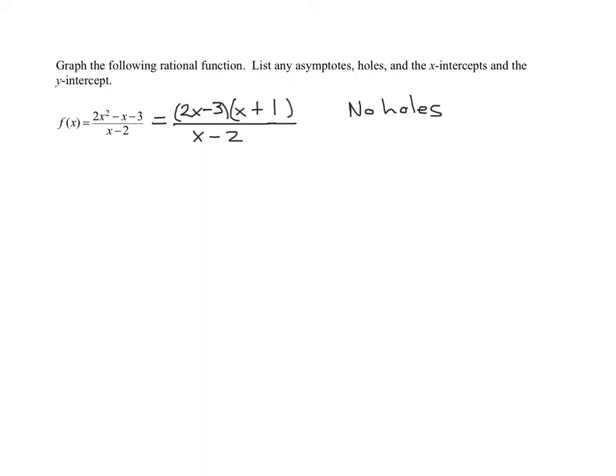Therefore, I know on this problem that I have no holes in the graph. We've taken care of the holes. Now we need to look at asymptotes. The first type of asymptote we always look at is vertical asymptote. I'm just going to write VA for vertical asymptote. Remember, we find that by setting the denominator equal to 0. So I get x minus 2 equals 0. So what's the equation of my vertical asymptote? x equals 2.